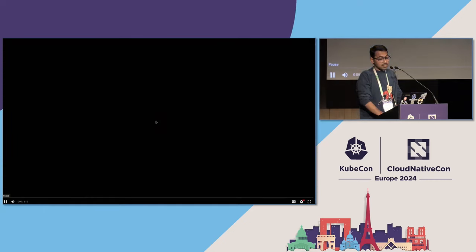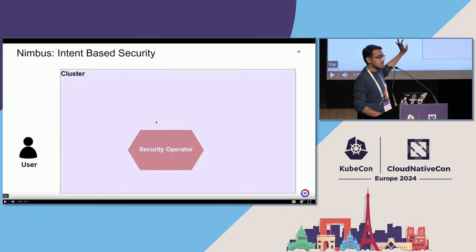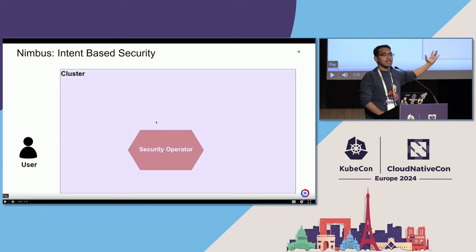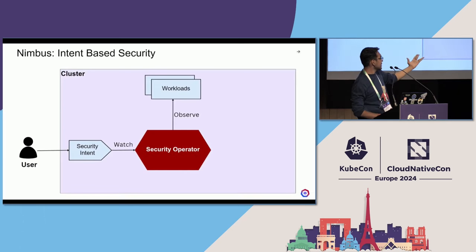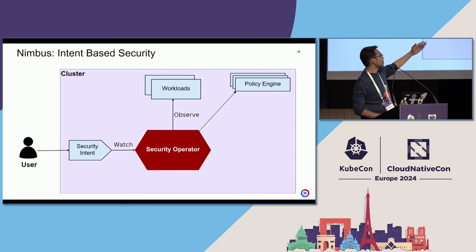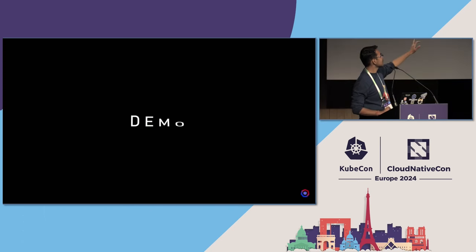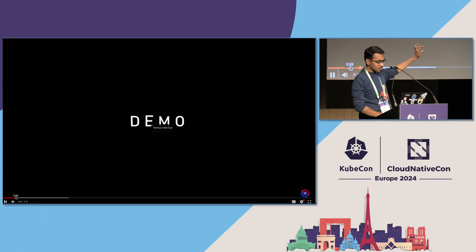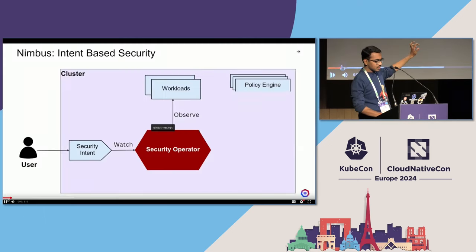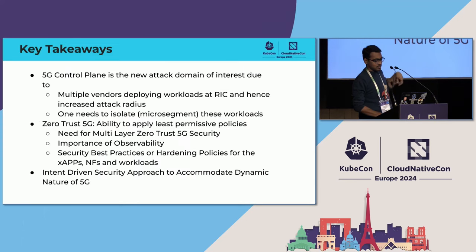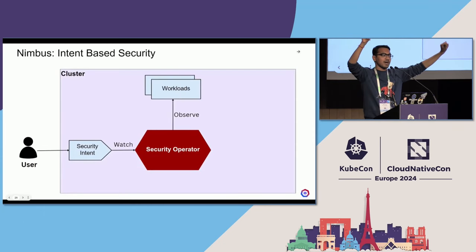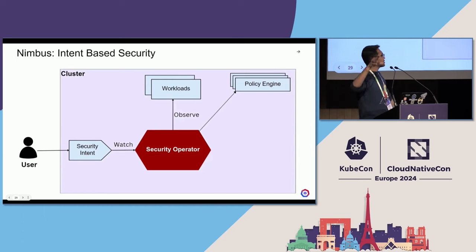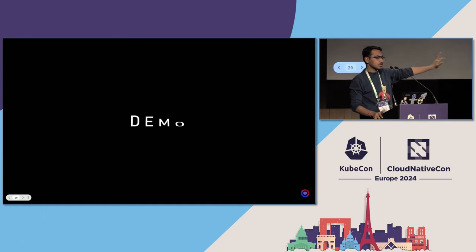This is a high-level approach towards what we've been working on for intent-driven security. It borrows the concept from the PVC-PV model. You create a security intent, you have a security intent binding, and the security intent binding is watched by an operator which, based on policy engines like KubeArmor, Cilium, Kyverno, or OPA, uses adapters to translate and generate policies depending on your security intent. The project we've named Nimbus. As a user, you create a security intent, and your security operator — Nimbus — watches that security intent and your workloads, matches the security intent with the security intent binding, and accordingly generates the final set of recommendation policies.